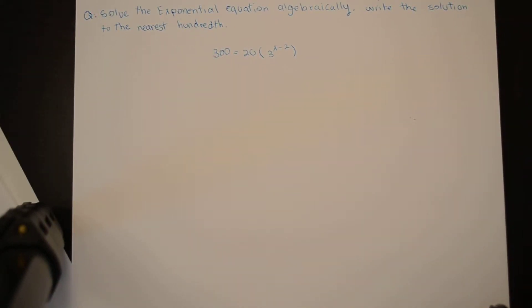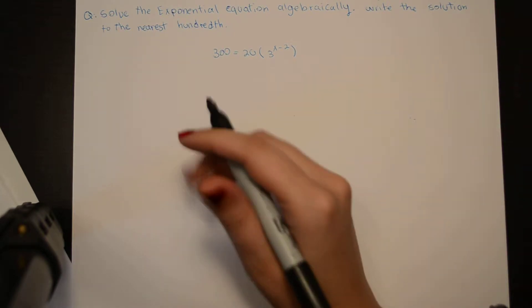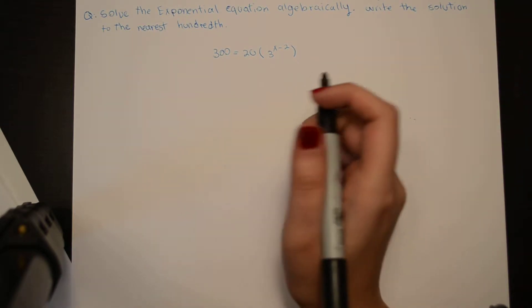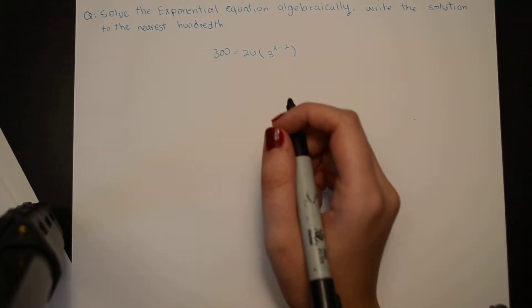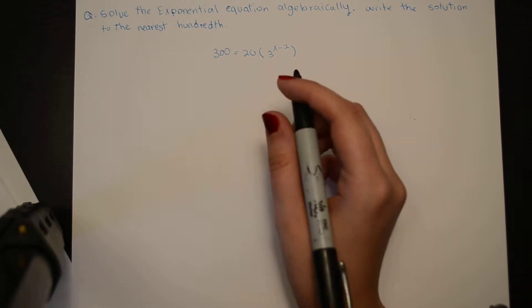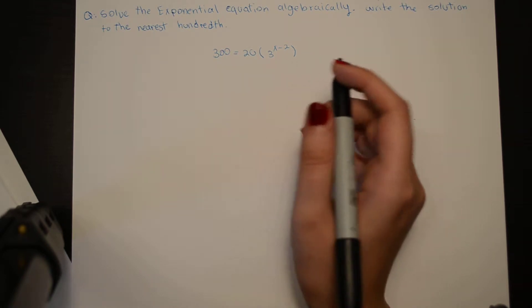The question is asking to solve the exponential equation algebraically and write the solution to the nearest hundredth. The equation we have is 300 equals 20 times 3 to the power of x minus 2.